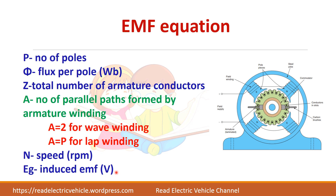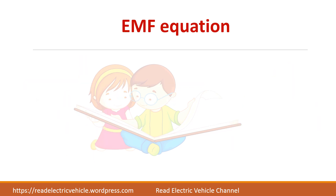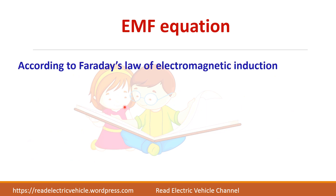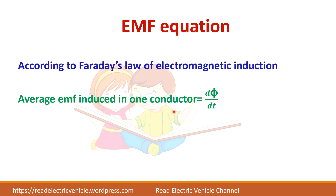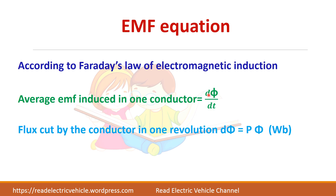The unit of EG is voltage. Now we will derive the EMF equation. According to Faraday's law, the EMF induced in one conductor is equal to dφ/dt, that is the rate of change of flux. dφ is the flux cut by the conductor in one revolution, which equals the number of poles multiplied by the flux produced per pole: dφ = P × φ.